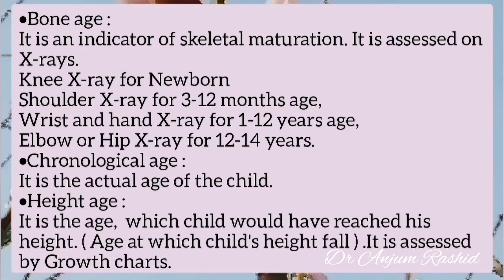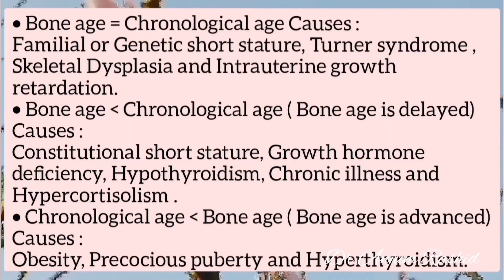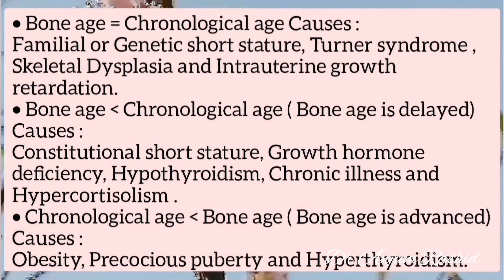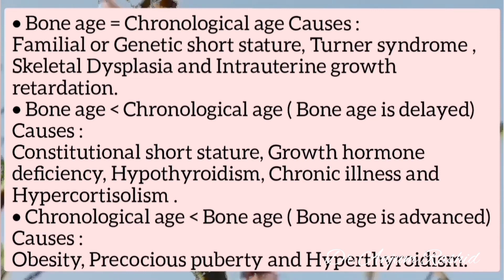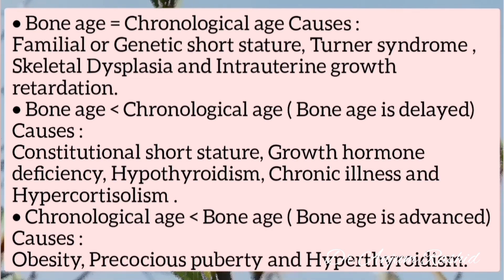Causes when bone age equals chronological age: familial or genetic short stature, Turner syndrome, skeletal dysplasia, and intrauterine growth retardation. When bone age is less than chronological age (delayed bone age), the causes are constitutional short stature, growth hormone deficiency, hypothyroidism, chronic illness, and hypercortisolism. When bone age is greater than chronological age (advanced bone age), causes are obesity, precocious puberty, and hyperthyroidism.